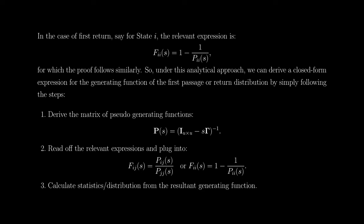Similarly, in the case of first return for state i, we can derive an expression relating the generating function of the first-return distribution to the pseudo-generating functions: F_ii(s) = 1 − 1/P_ii(s). The proof for that follows similarly.